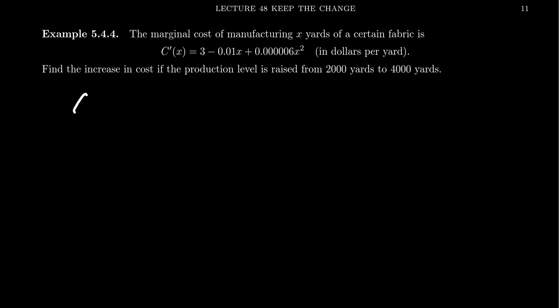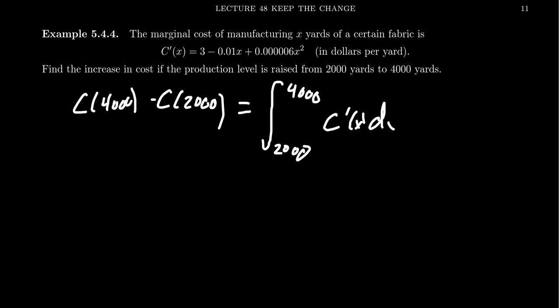So we want to figure out what's the cost from going from 2,000 yards to 4,000 yards. It's this difference. Well, we know from the fundamental theorem of calculus that the integral from 2,000 yards to 4,000 yards, if we integrate our marginal cost function, will do exactly that. So putting in the marginal cost there, make sure you get the right number of zeros. There's a lot of those floating around.